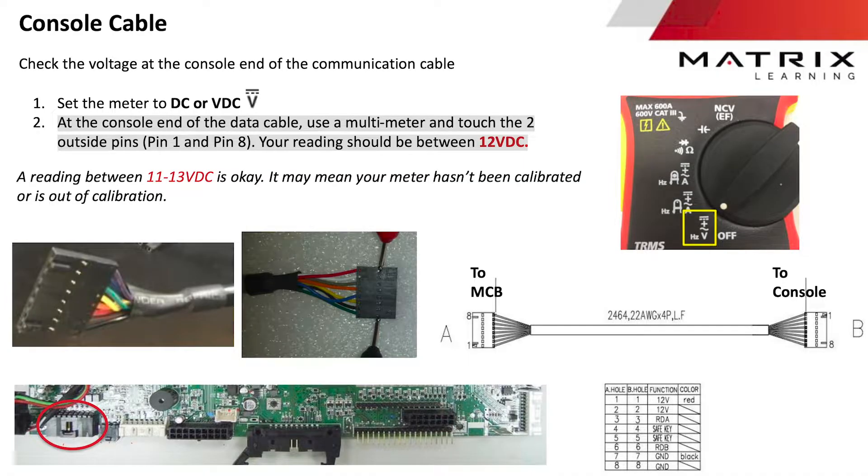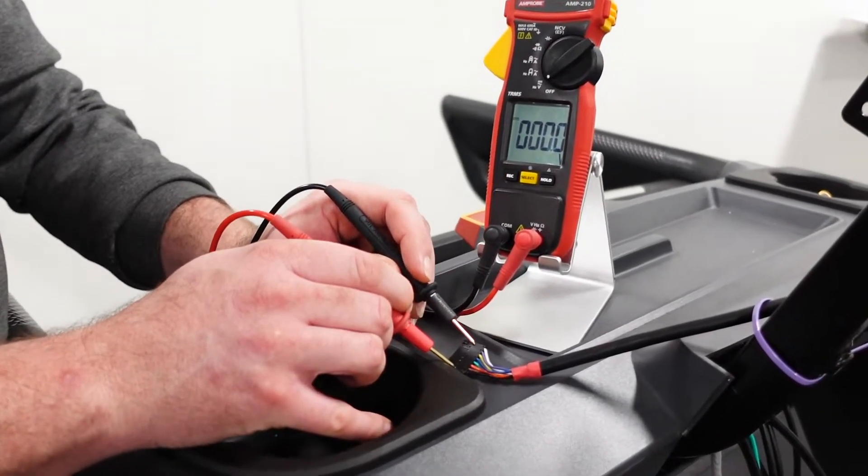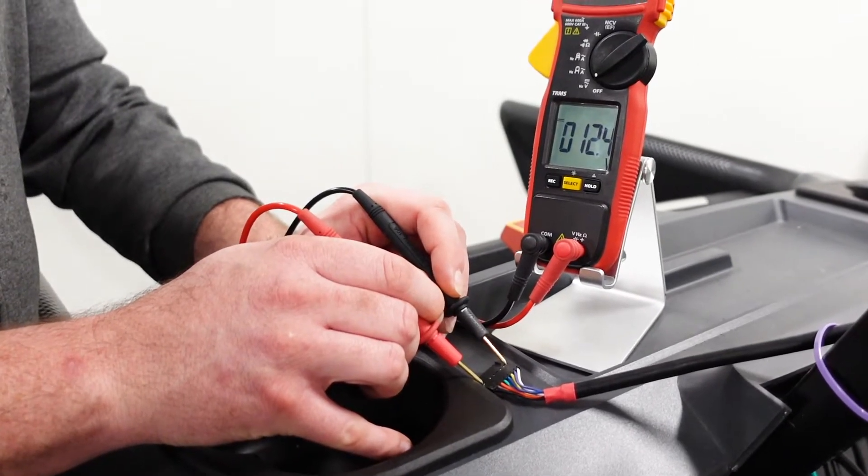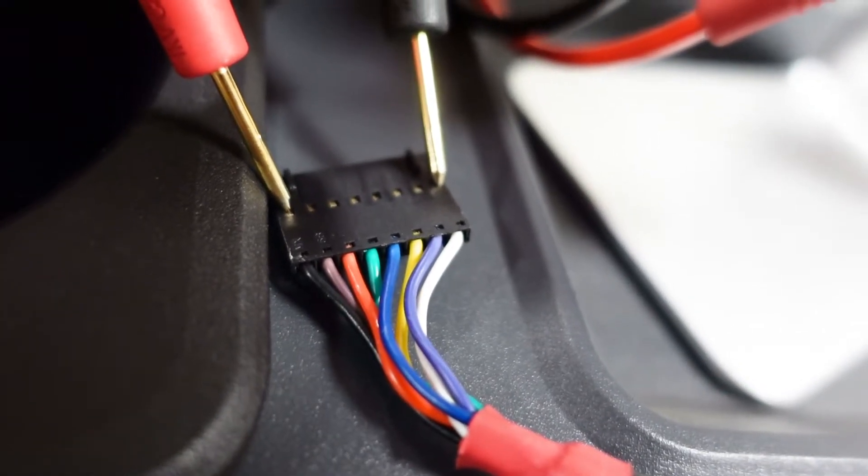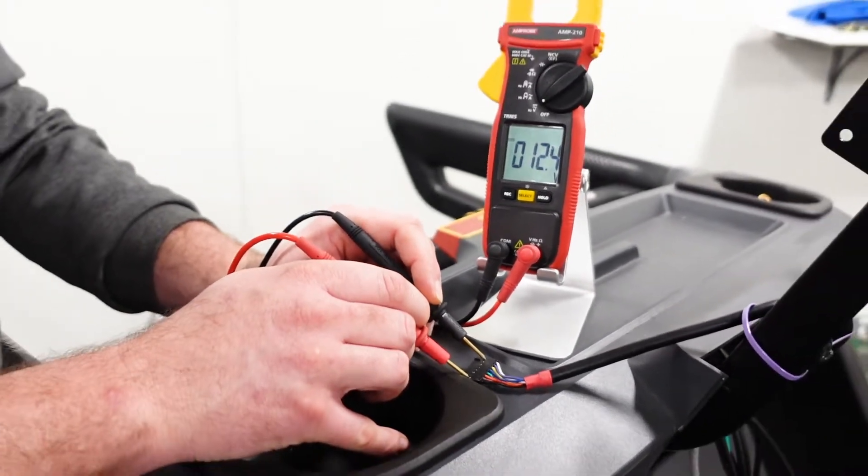Checking the power to the console can be done by testing the DC power. At the console end of the data cable, use a multimeter and touch the two outside pins, pin 1 and pin 8. Your reading should be around 12 volts DC.